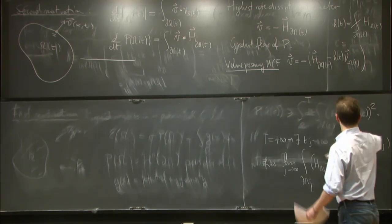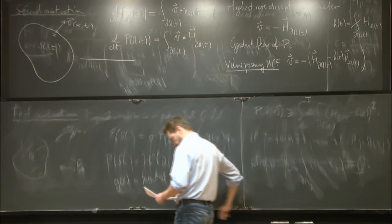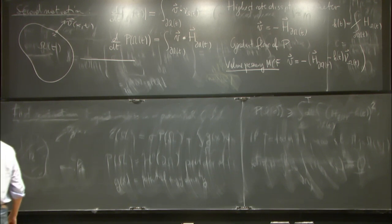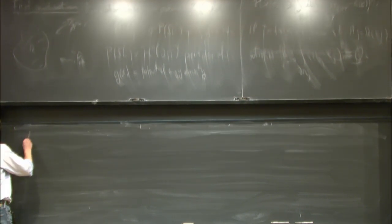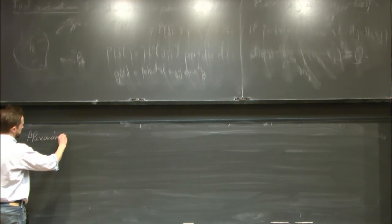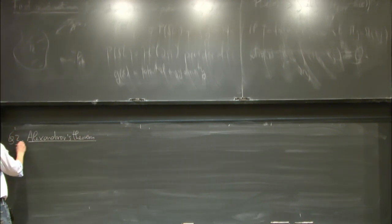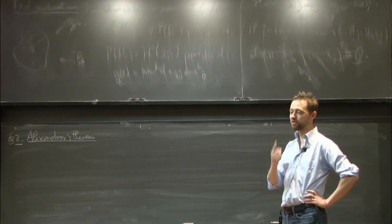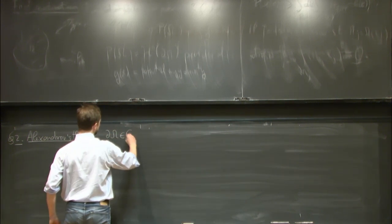Now let me tell you what we know about the constant mean curvature case. The fundamental result is of course Alexandrov's theorem, which tells us that essentially the only CMC boundary enclosing finite volume is the sphere.